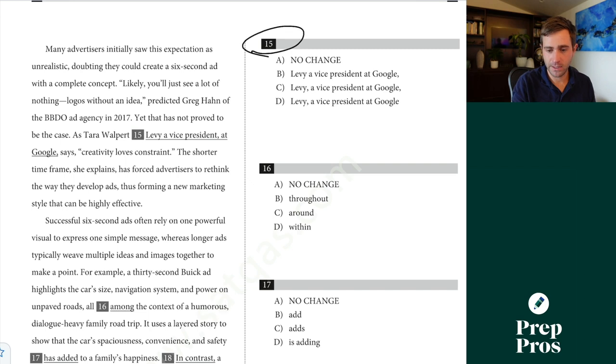All right, 15 here. This clearly looks to be a punctuation comma question. So once again, skim through this part really quickly, going a little faster than I normally would just for the sake of the video here. But yet that has not proved to be the case. As Tara Walpert-Levy, a vice president at Google says. Well, whenever we see kind of two commas surrounding something, that's the best one to typically check. And if we can take it out, that tells us it's right. As Tara Walpert-Levy says we can pull that out, works perfectly fine. C is our correct answer.